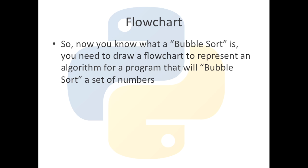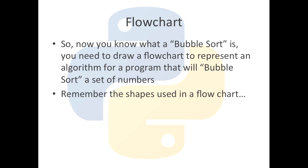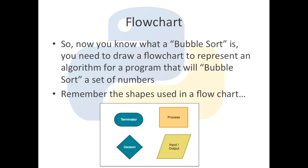Now we know what a bubble sort is, we need to draw a flowchart to represent the algorithm. Remember the shapes used in flowcharts: the terminator for start and end, the decision diamond for any decisions, a process box for something that has to be done, and the input/output shape for any user inputs or outputs to the display such as print.